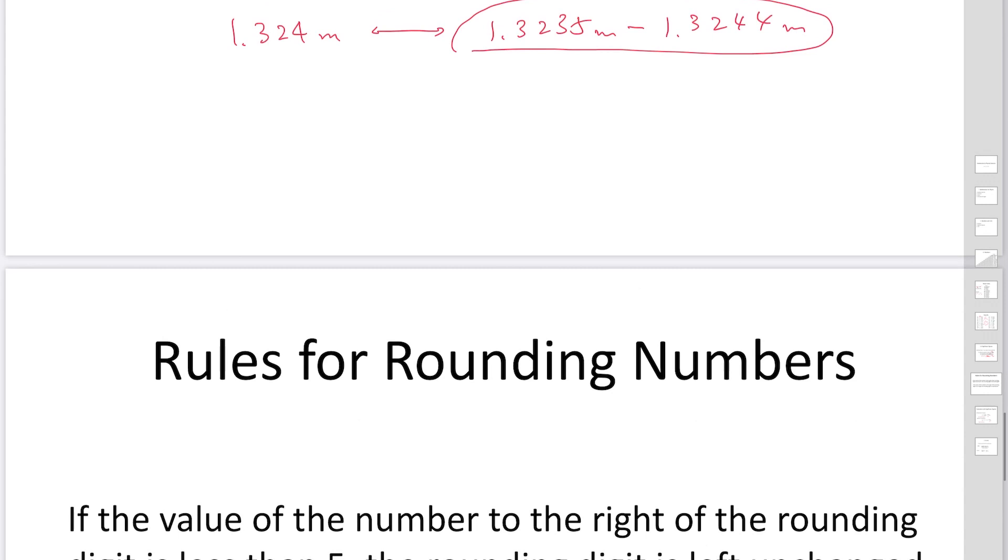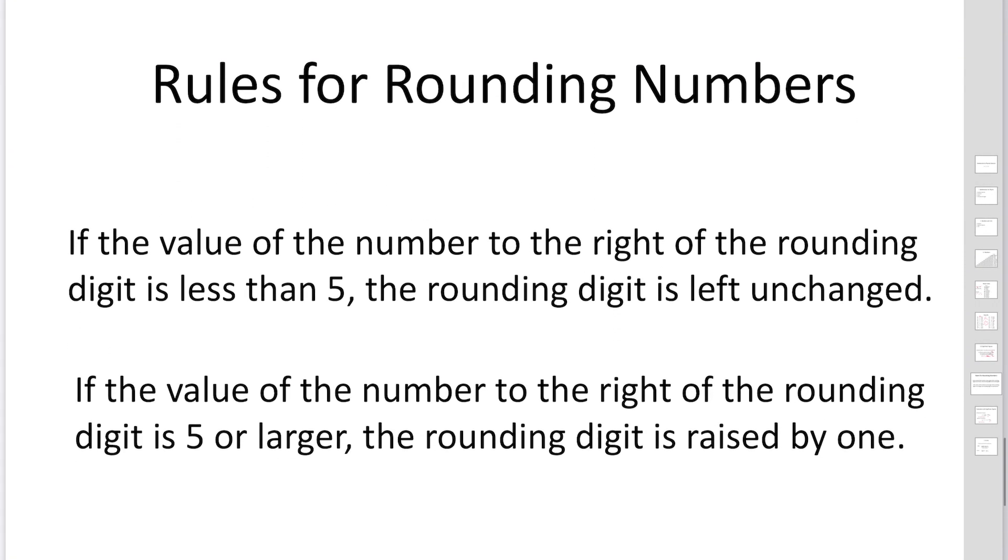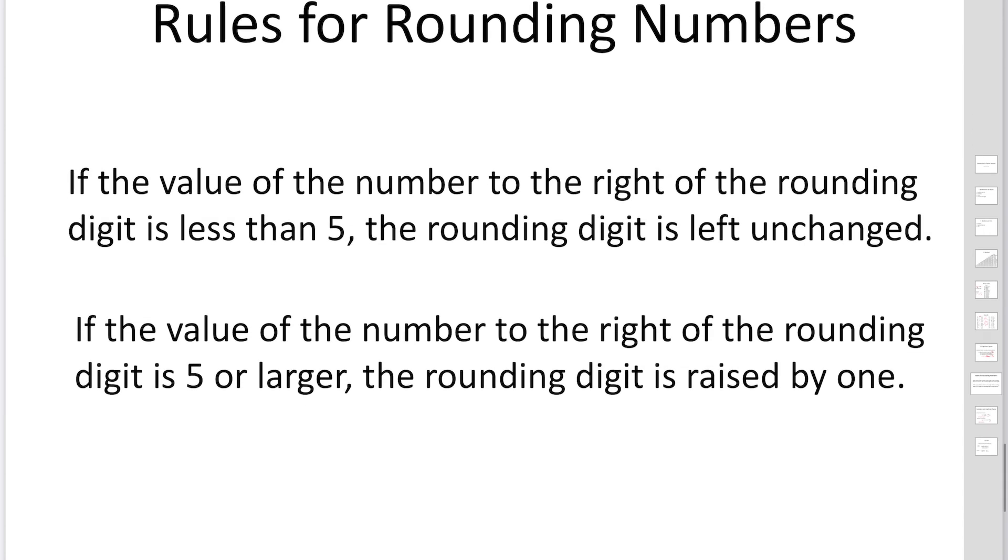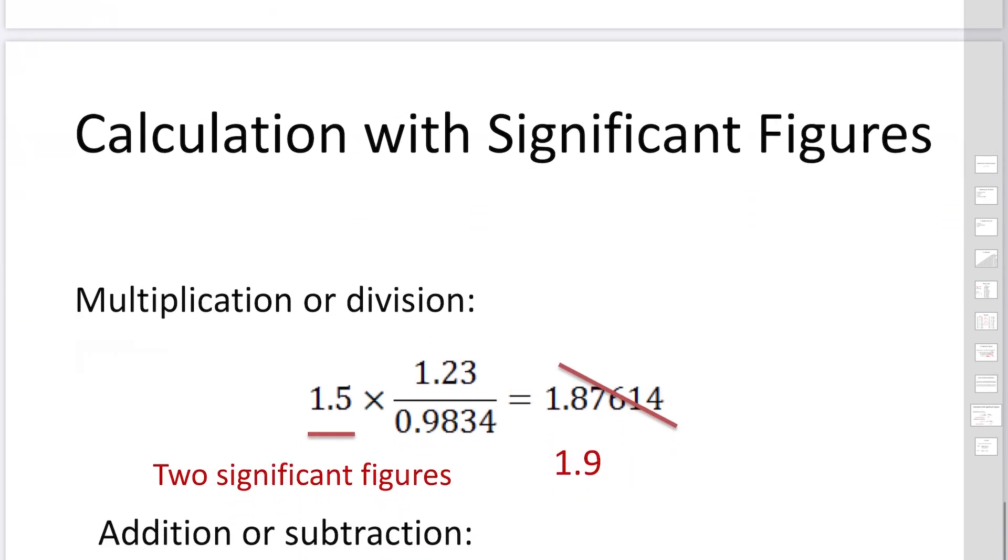To find the numbers, I need to explain the rules for rounding. If the value to the right of the rounding digit is less than 5, the rounding digit is left unchanged. If it's 5 or larger, the rounding digit is raised by 1. This is the rule for rounding numbers when you perform calculations.